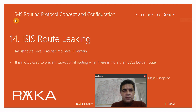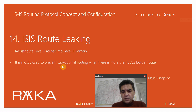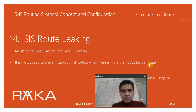Welcome to another video on ISIS routing protocol concept and configuration. In this section we will talk about ISIS route leaking, which redistributes level 2 routes into the level 1 domain — which is by default not redistributed — and it is mostly used to prevent sub-optimal routing when there is more than one level 1/level 2 border router in a level 1 domain.